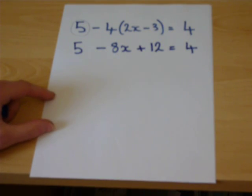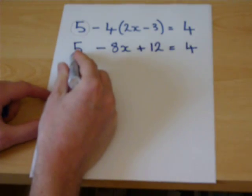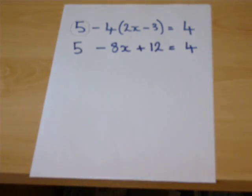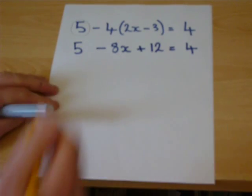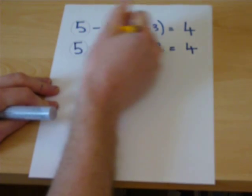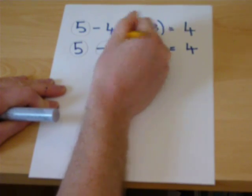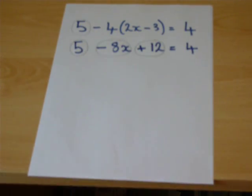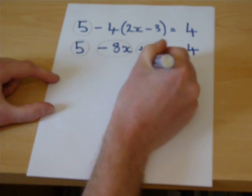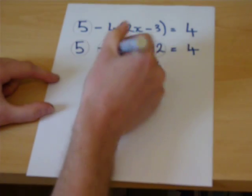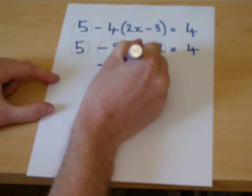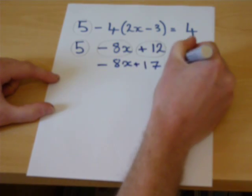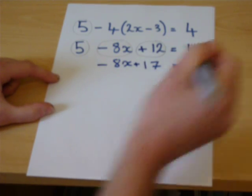On the left-hand side, we have a 5, a minus 8x, and a 12. Be very careful to see what sign goes to what object. We have a 5 and a 12, that makes a 17. We have a minus 8x, and that must equal 4.